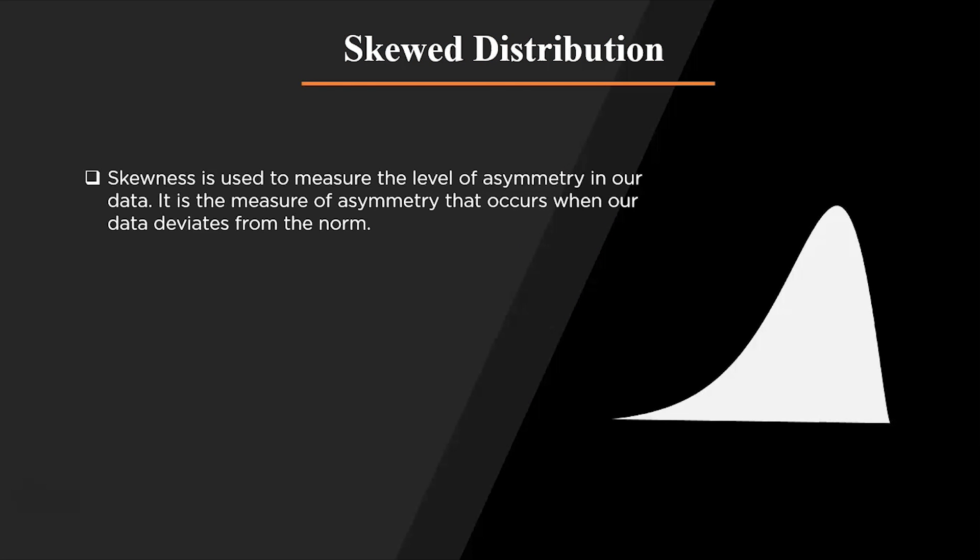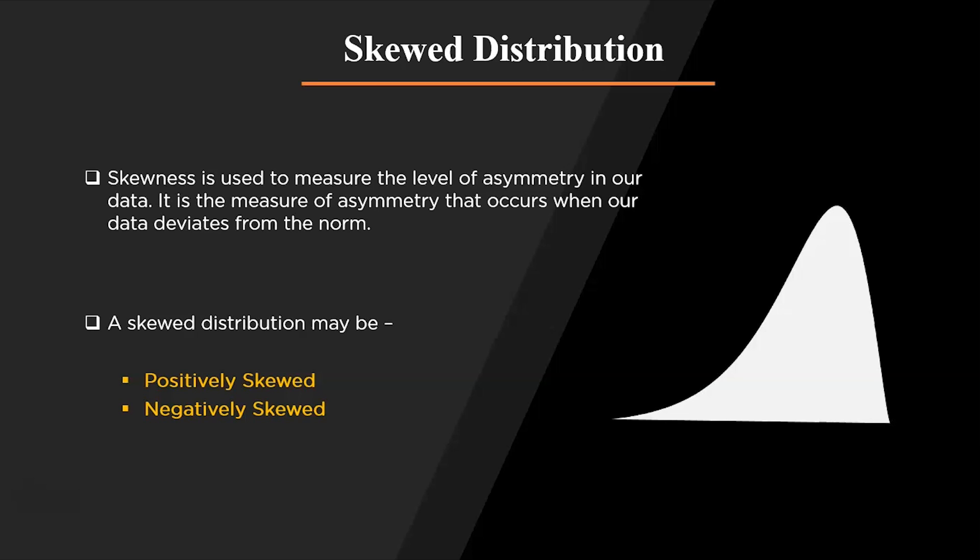Skewness is used to measure the level of asymmetry in our graph. It is a measure of asymmetry that occurs when our data deviates from the norm. Sometimes the normal distribution tends to tilt more on one side because the probability of data being more or less than the mean is higher, making the distribution asymmetrical. This means the data is not equally distributed. Skewness can be of two types: positively skewed and negatively skewed.